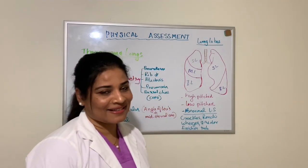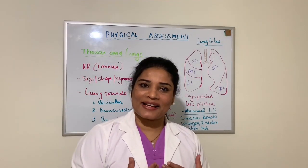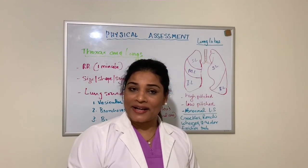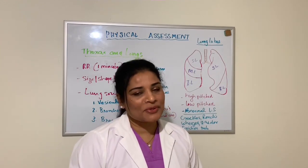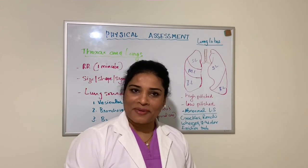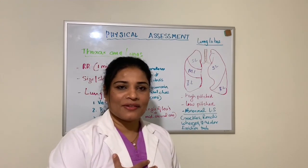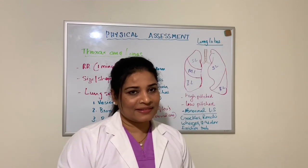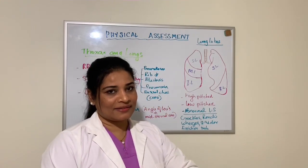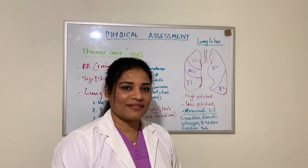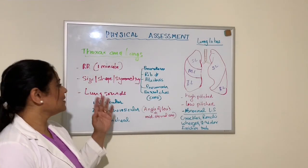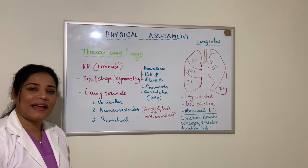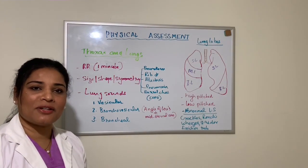Next we are going to talk about the assessment of the thorax. When you assess the thorax, you look for the respiratory rate for one complete minute, and you look for the chest rise and fall. Then you look for the size, shape, symmetry, and anterior-posterior diameter of the chest.